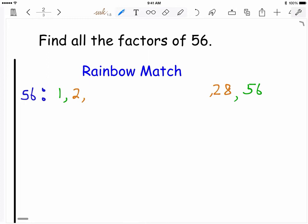The next whole number to try should be 3. Since it does not go in, you skip that. And now we try 4 and it does go in. So you record that next to the 2, followed by its factor partner 14 right before the 28, again to stay organized.